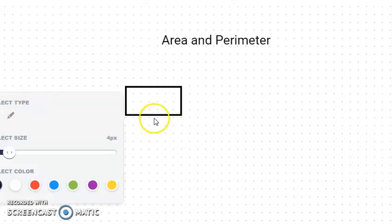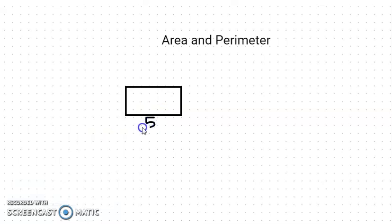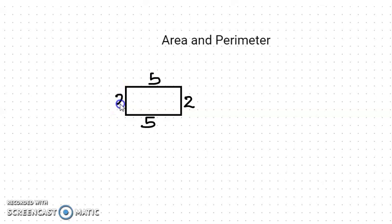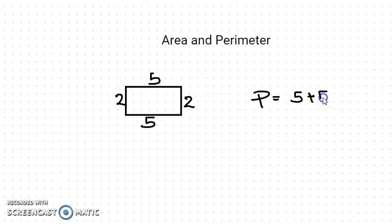For example, suppose here 5 centimeters and here 2 centimeters. In a rectangle, the opposite sides are equal, so here also 5 and here 2. The perimeter of this rectangle we can find by adding all these sides: 5 plus 5 and 2 plus 2. 5 plus 5 is 10, 2 plus 2 is 4.